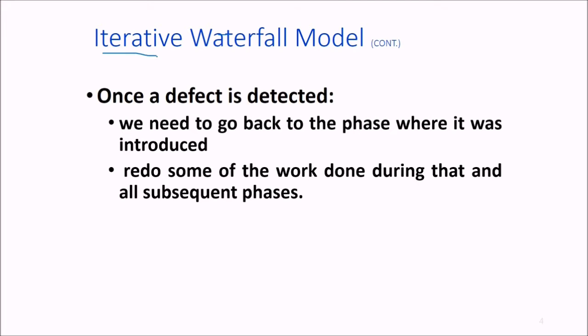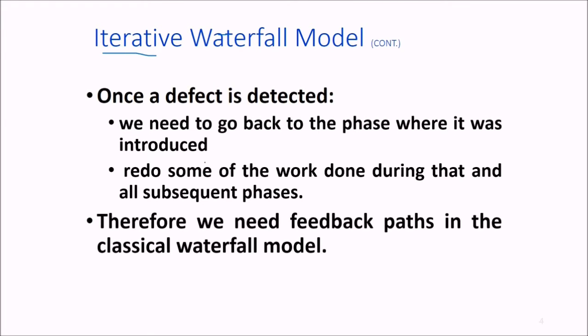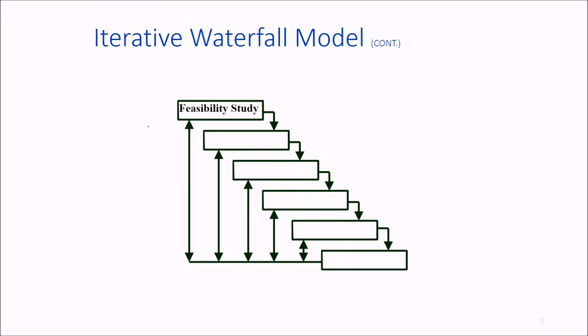That is why we call this the iterative waterfall model. We need to have feedback paths in the classical waterfall model. We have feasibility study, requirement analysis, design, coding, testing, and maintenance, with feedback paths between these phases.